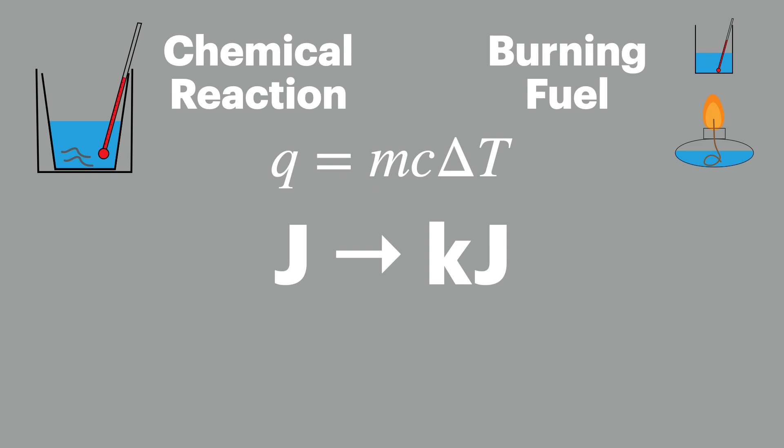Now our answer for this equation always comes out in joules and we usually give an enthalpy change in kilojoules as the numbers tend to be quite big. So we'll divide our value by a thousand to get the value in kilojoules.